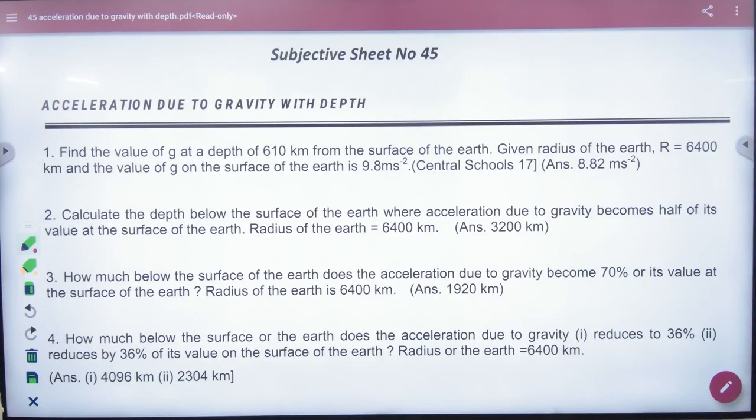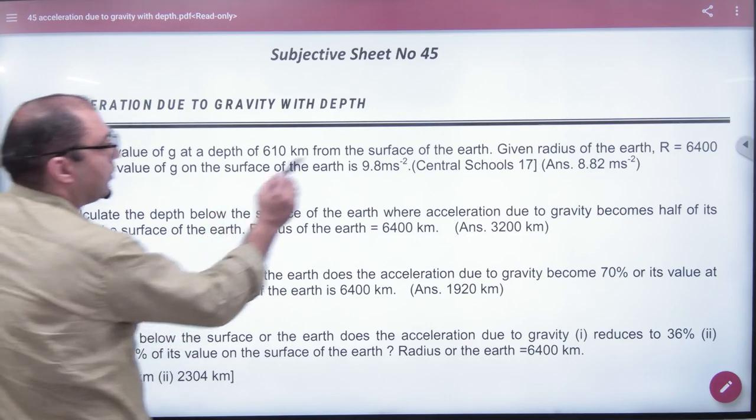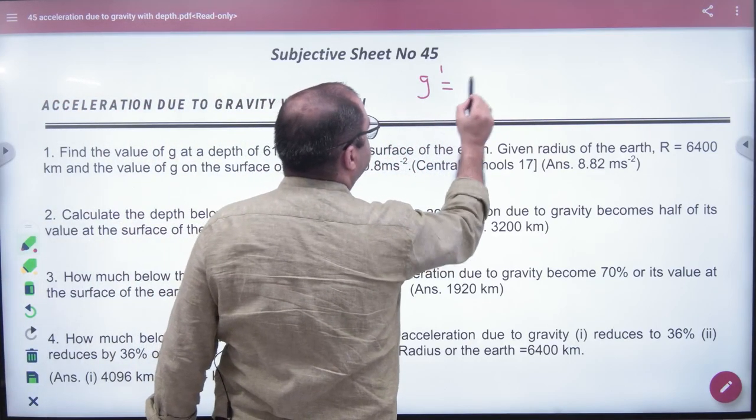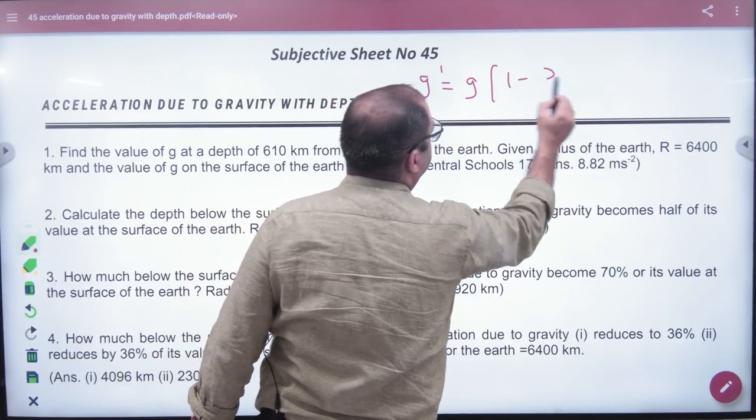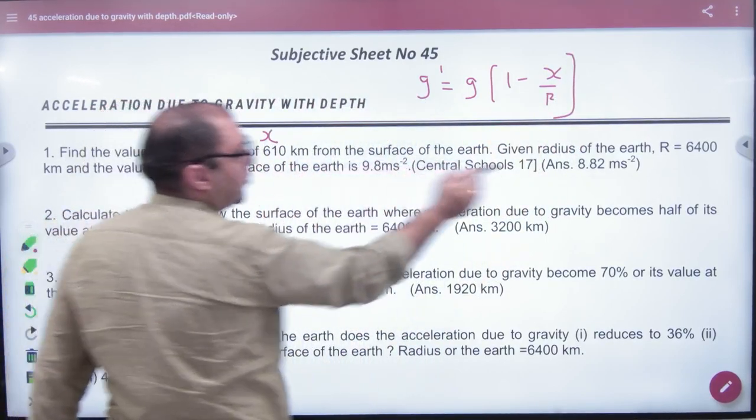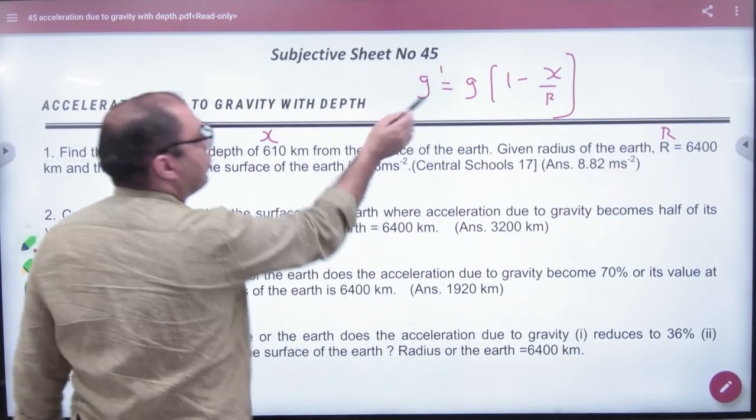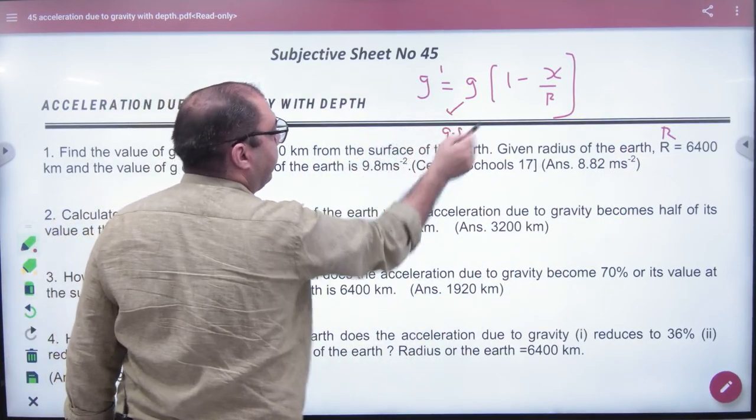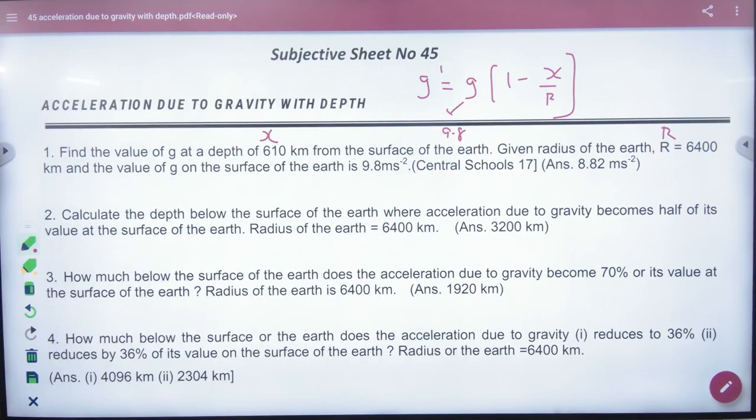Find the value of g at a depth of 610 km from the surface of earth. What's the formula? For depth, the formula is g' = g(1 - x/R). In this question, x is given, R is given, and g is 9.8. We have to find the answer. The first answer is done.